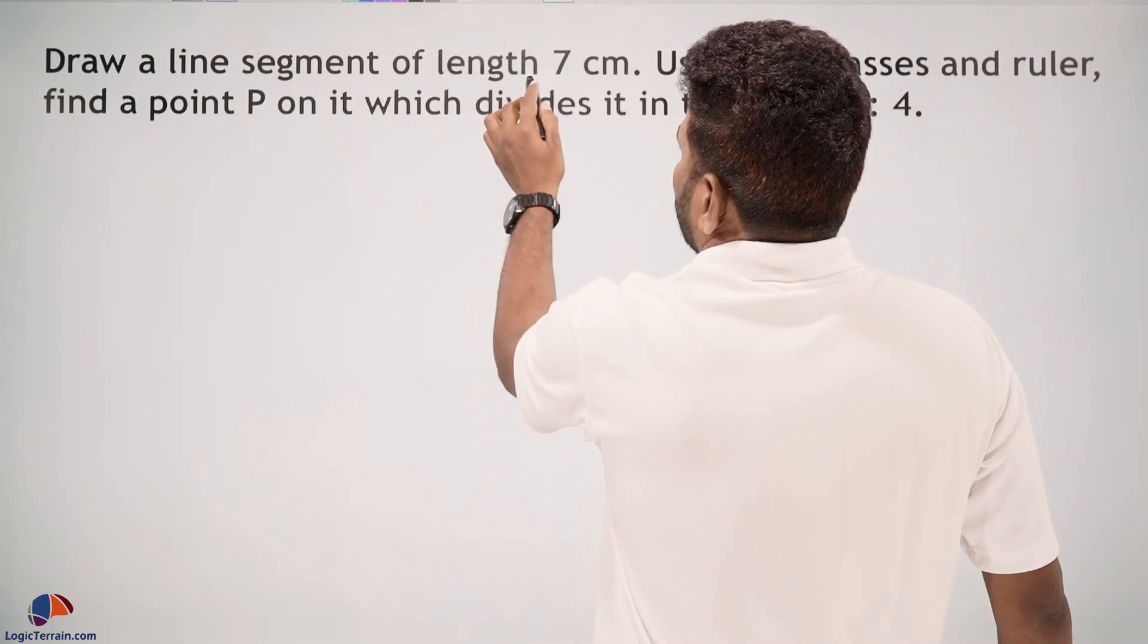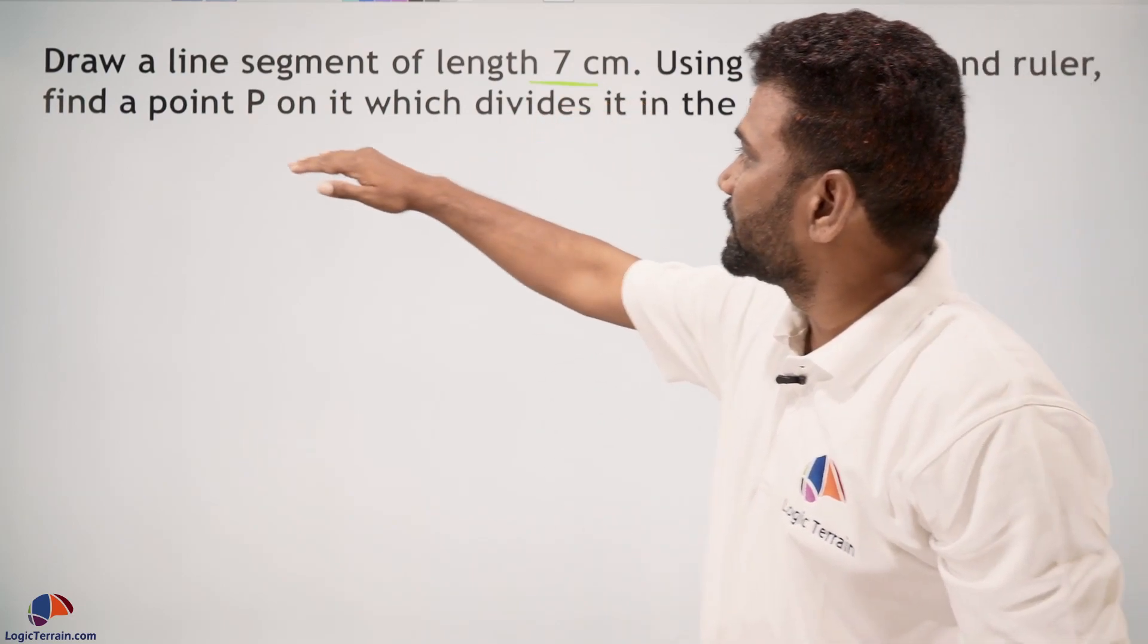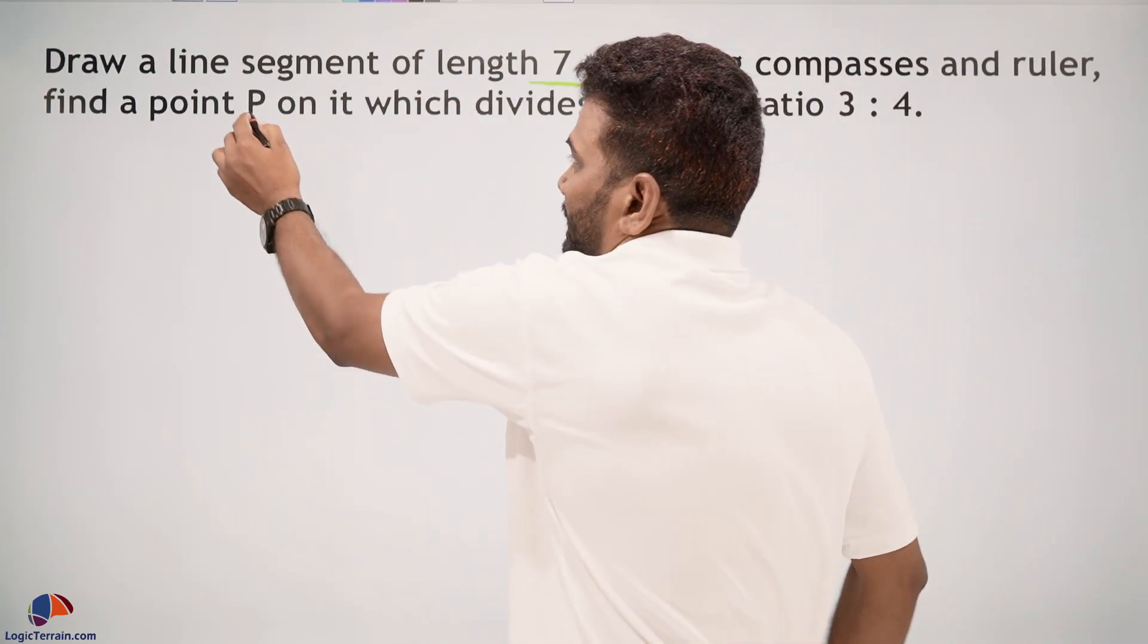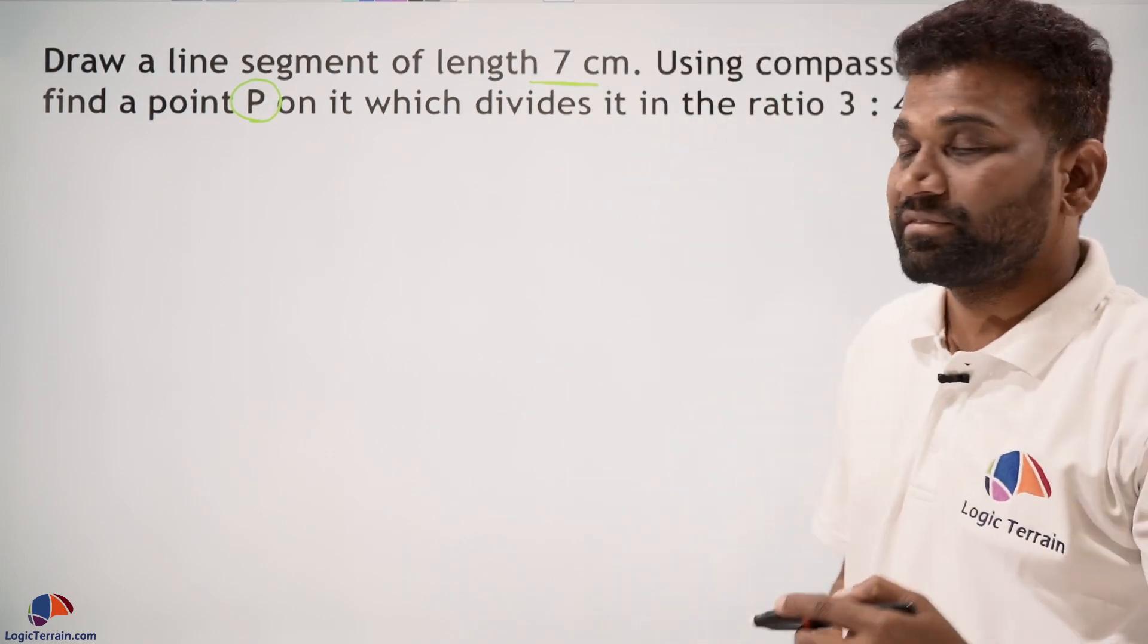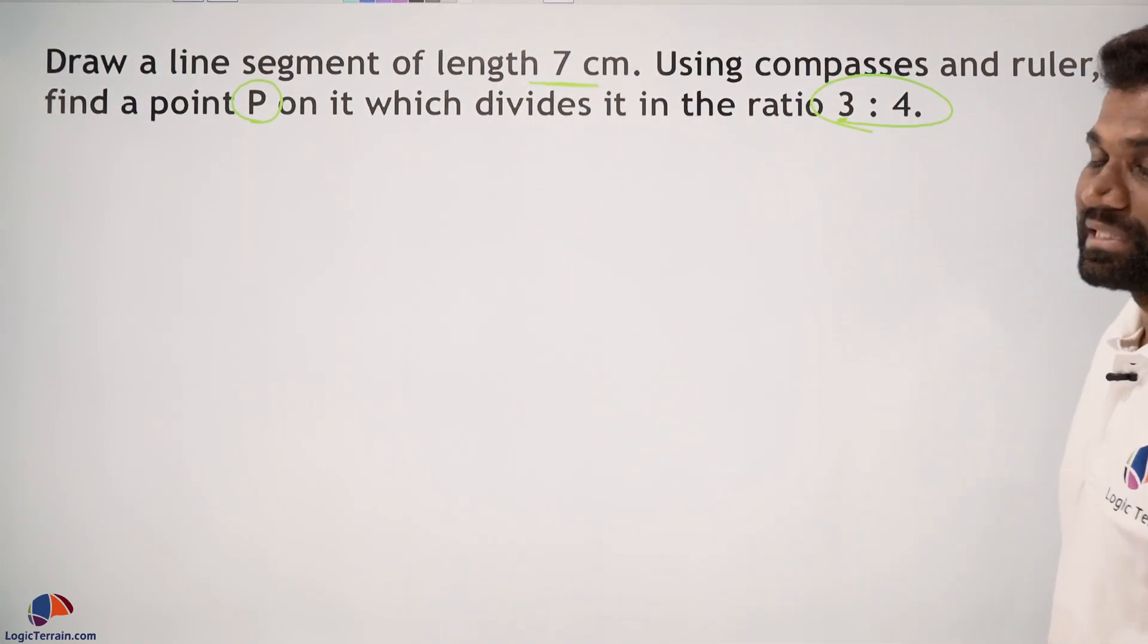We have to draw a line segment of 7 centimeters and find a point on this line segment, namely P, in such a way that point P divides this line segment in the ratio 3:4. First, we'll draw a line segment of 7 centimeters.